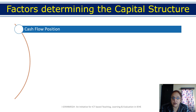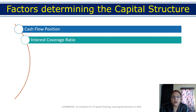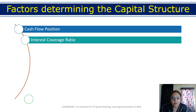If you have regular income, then you can issue more debentures in your capital structure. The next factor is the interest coverage ratio, which is calculated as EBIT divided by interest. If this ratio is higher, you can include more debentures in your capital structure.